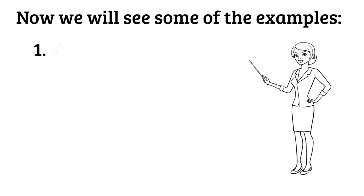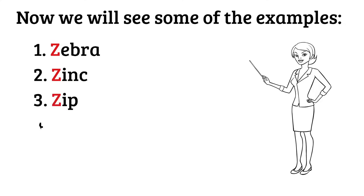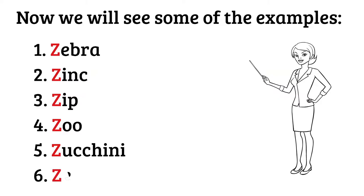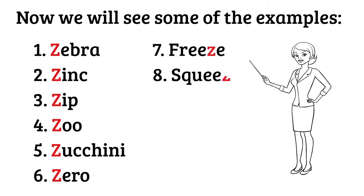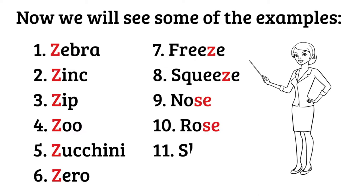This is Z as in zebra. This is Z as in Zen. This is Z as in zip. That says Z as in zoo. That says Z as in zucchini. That says Z as in zero. That says Z as in freeze. This is Z as in squeeze. SE says Z as in nose. SE says Z as in rose. ESA says Z as in shoes. SE says Z as in clothes.